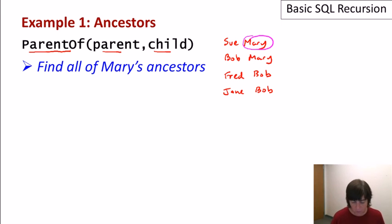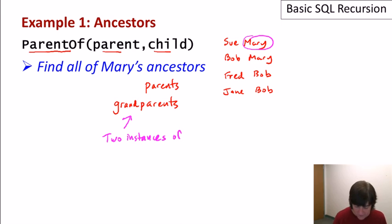We can certainly write a SQL query that finds Mary's parents. I'll let you do that as an exercise, it's very straightforward. We can even write a query to find Mary's grandparents. A query to do that would involve two instances of ParentOf, so you'd be joining ParentOf with itself. We could even find the great-grandparents by using, say, three instances and joining them. The problem is that we might not know in advance how many steps there are to get all of Mary's ancestors. And each one of those steps does involve an instance of ParentOf and a join. So this query cannot be executed using standard SQL.